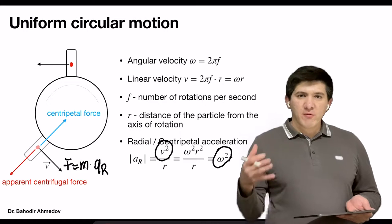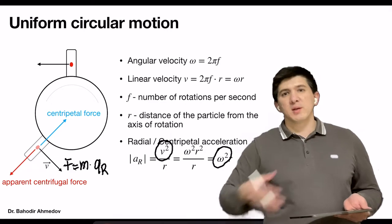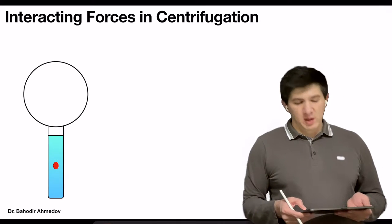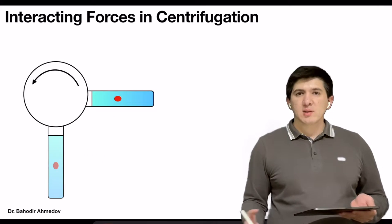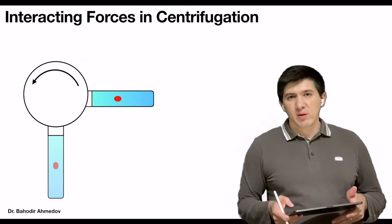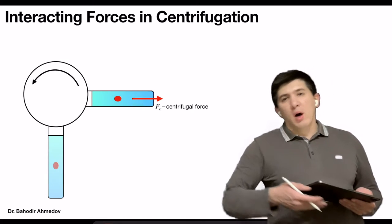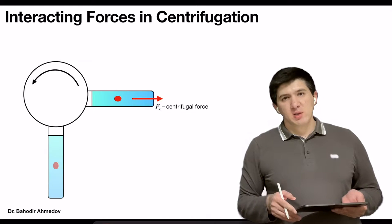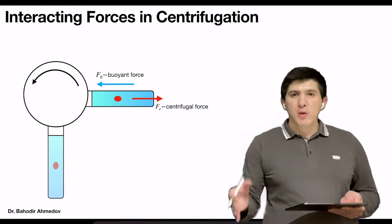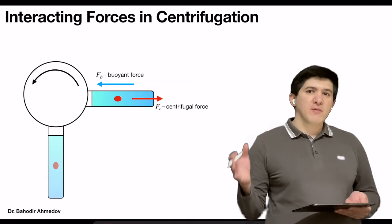The centrifugal force pulls the particles out from the circle towards the bottom of the tube. When we put a particle into a tube with some fluid and try to rotate it, there are other forces that are going to interact with the particles at the same time as the centrifugal force. The centrifugal force tries to pull the particle out from the circle towards the bottom of the tube, and there is another force called the buoyant force, which tries to push the particle to the top of the tube in the direction of the center of rotation.